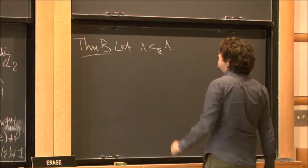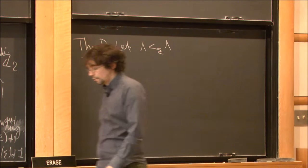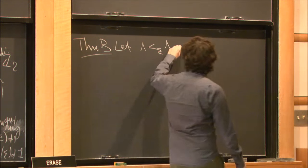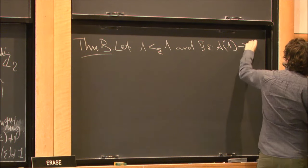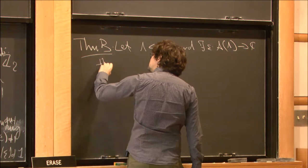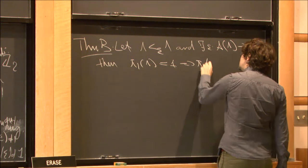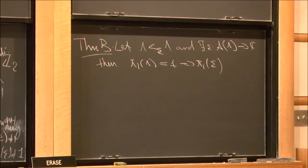The second theorem I want to prove: assume both ends of the cobordism are the same Legendrian manifold λ. I don't require the geometric condition on the top end, but I assume the augmentation exists over ℂ. If λ is simply connected, so is Σ, without any other assumption. Both theorems use some long exact sequence.